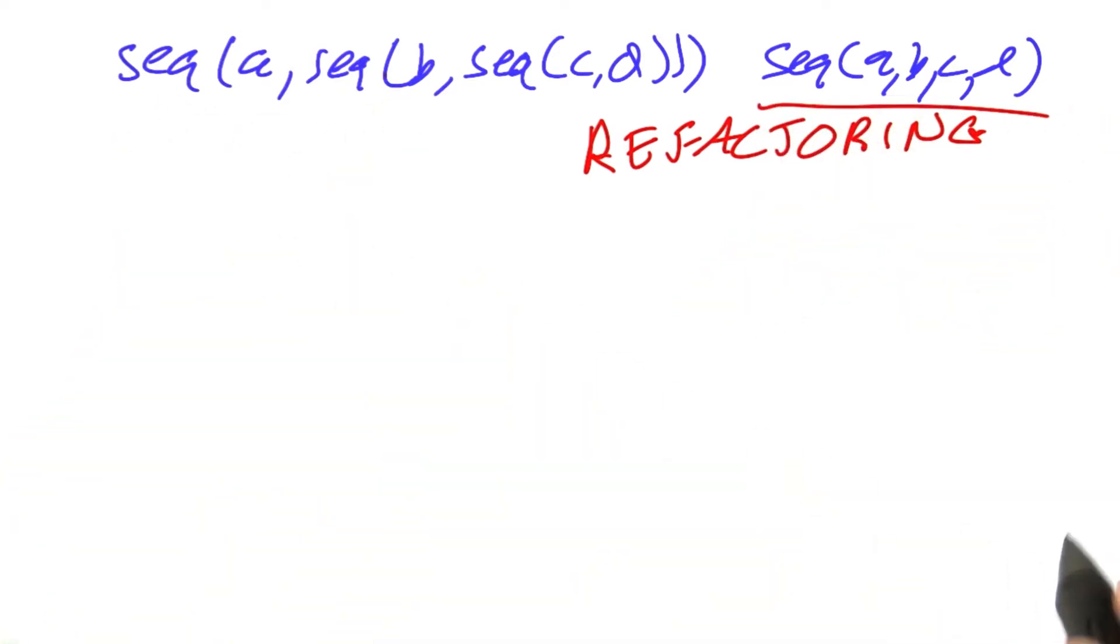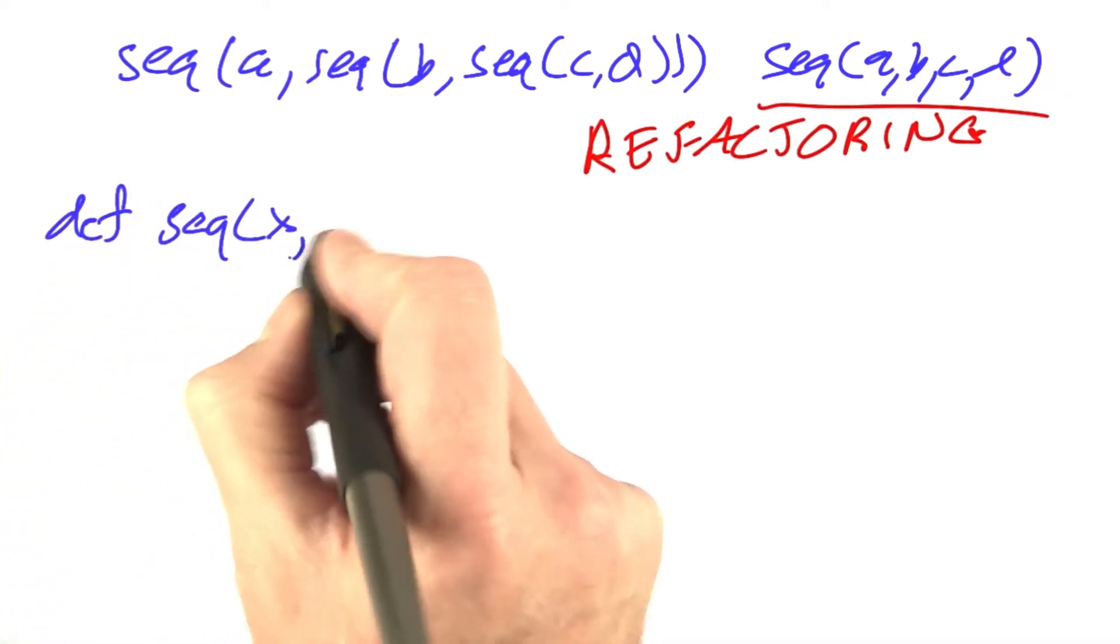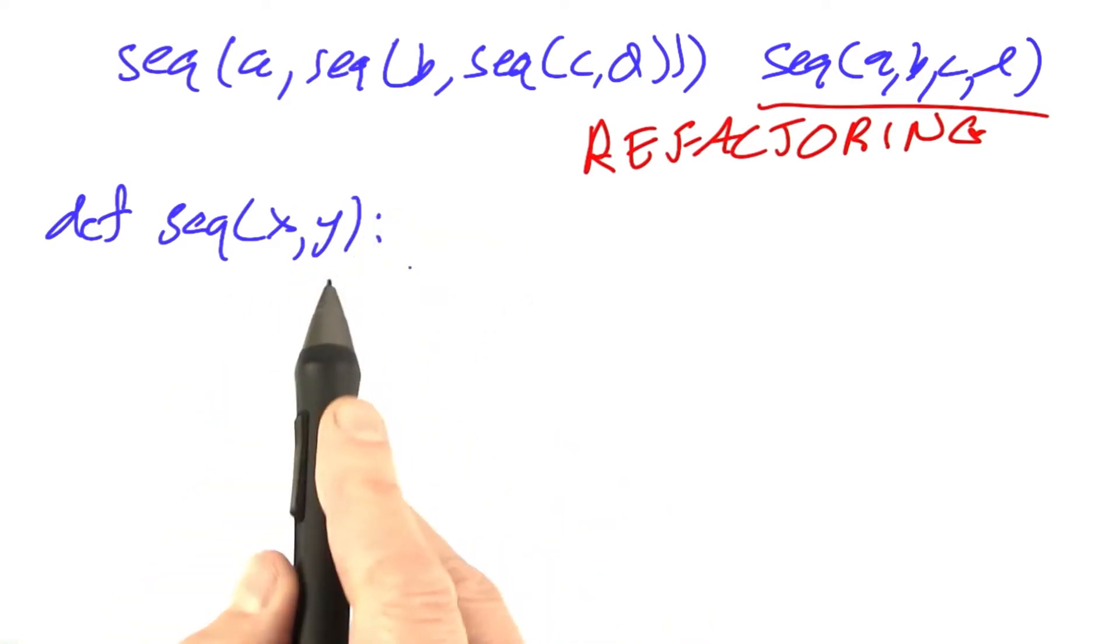Why did I write seek this way? It was really convenient to be able to define sequence of X, Y, and only have to worry about exactly two cases.